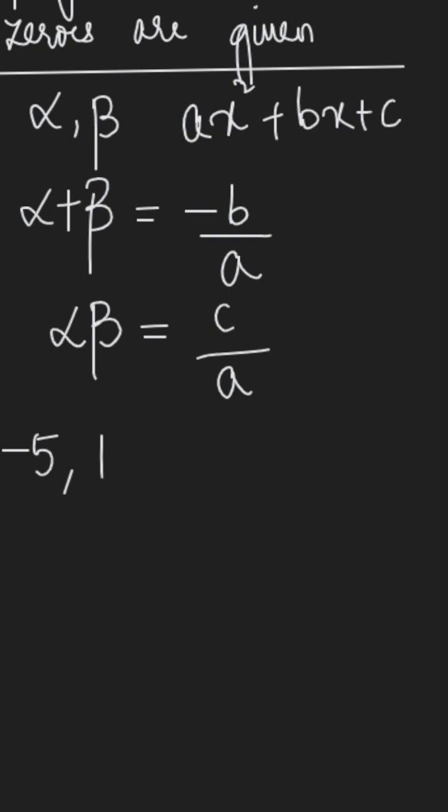For that, let us do the sum of the zeros, which is negative 5 plus 1. We get negative 4, and we can write this negative 4 as negative 4 over 1, and comparing this with negative b over a,